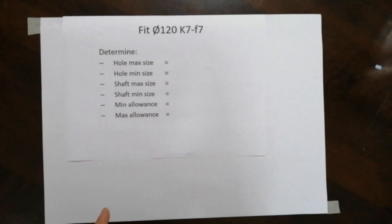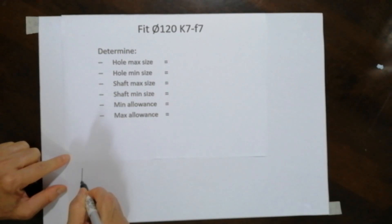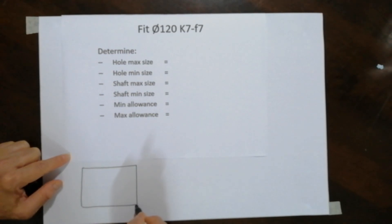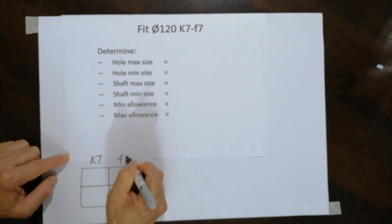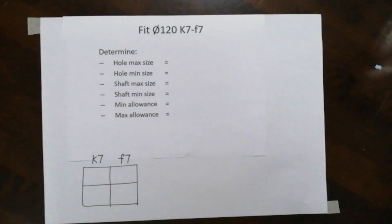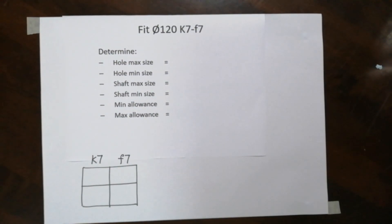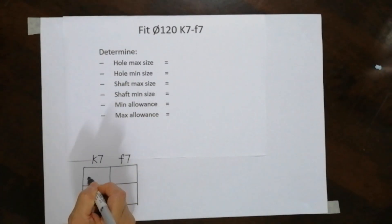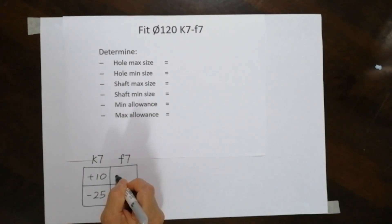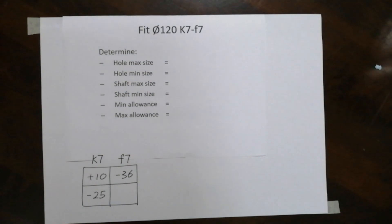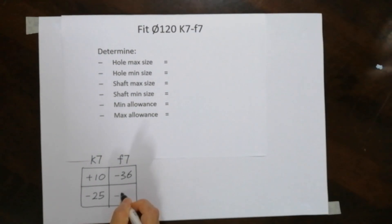This fit has a basic size of 120 and it's k7-f7. First, we also do the same thing — we draw the box and collect the four values for k7 and f7. I'll write down the values first and then show you how I got them. The values are: plus 10, minus 25, minus 36, and minus 71.